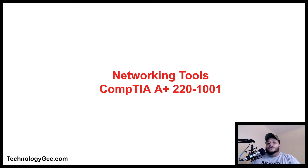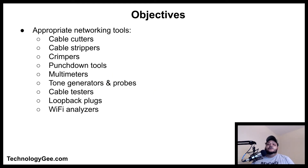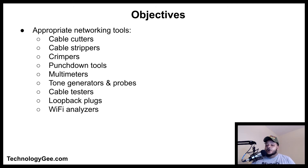What up everybody, this is your boy Tech G back with another video to help you successfully pass the CompTIA 220-1001 examination. When it comes to building a physical network, you will need some key networking tools that will help you with running, terminating, and testing cable. We're going to talk about tools such as cable cutters, cable strippers, crimpers, punch down tools, multimeters, tone generators and probes, cable testers, loopback plugs, and Wi-Fi analyzers.